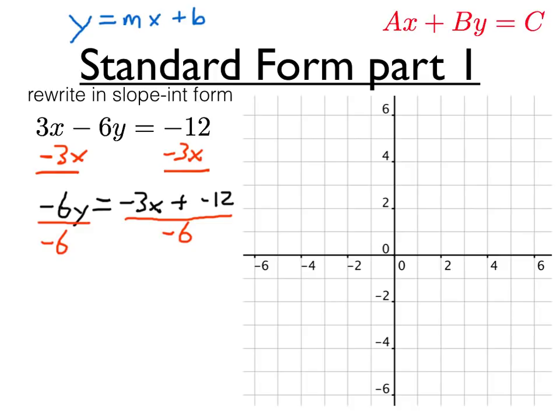Negative 6 divided by negative 6 equals 1. Now we've got a fraction on the other side, so let's split that up into two parts. Let's simplify the fractions. We have y equals negative 3 divided by negative 6, that's just 1 half. So we have 1 half x plus negative 12 divided by negative 6 is 2.